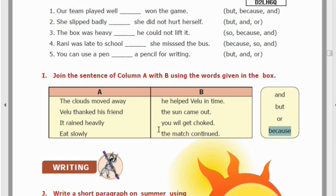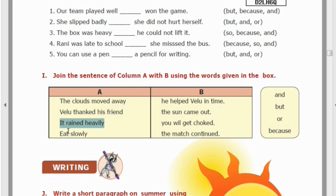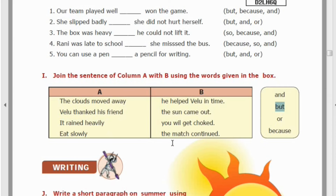Next: 'It rained heavily. The match continued.' We need to find the conjunction to connect these two sentences. It rained heavily but the match continued — so we use 'but.'